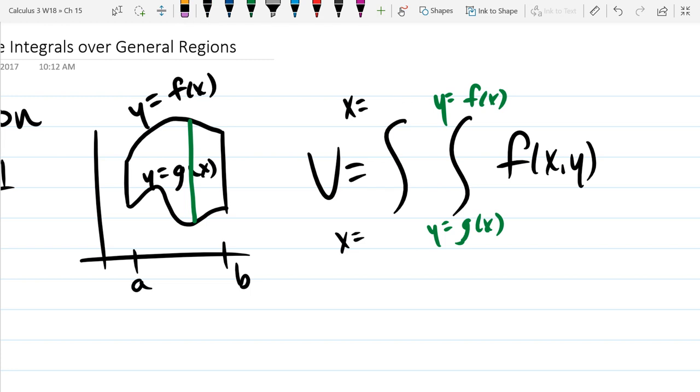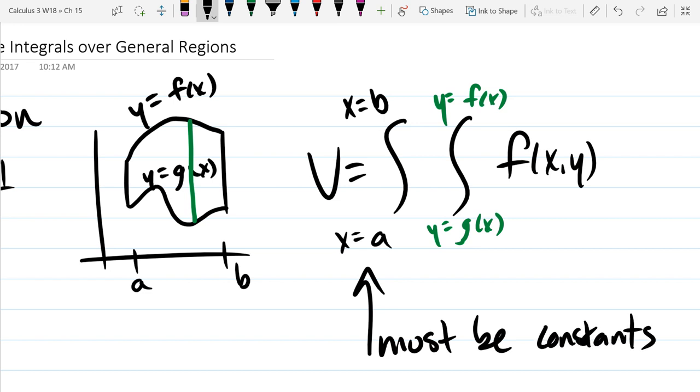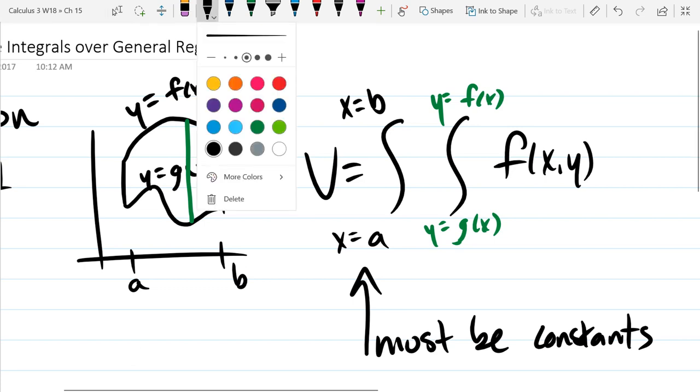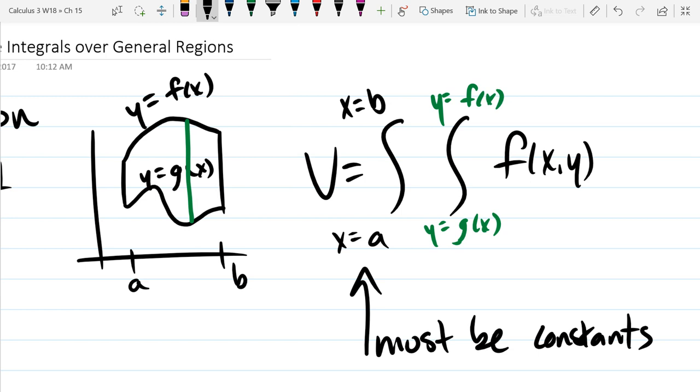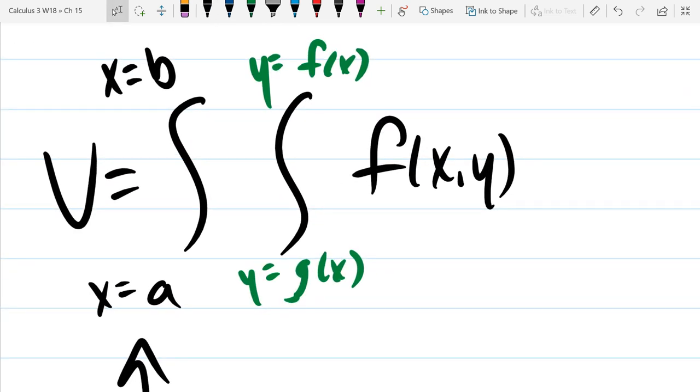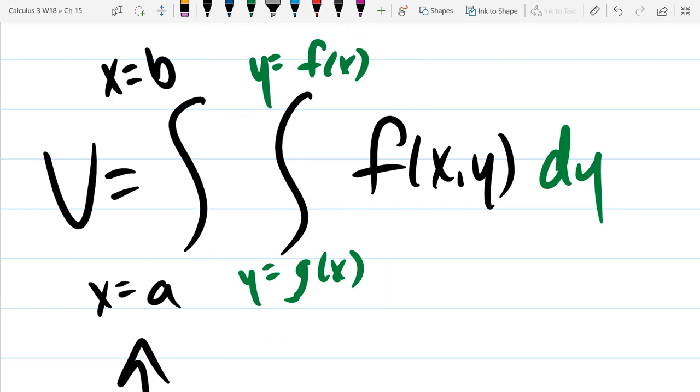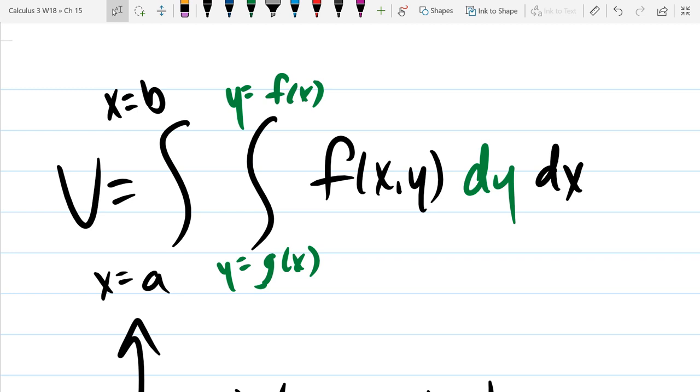Your last bound, so like your outermost bounds, have to be numbers. So those must be constants. Your inner bounds, however, do not have to be constants. So that's where it's a bit tricky. And then what order? I can only write dy dx or dx dy. Which of those two do I write here? dy dx. So I do dy first because it needs to match. That's the inner variable right there. So it goes dy first, dx second.